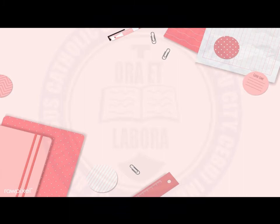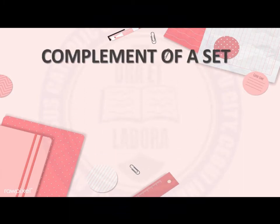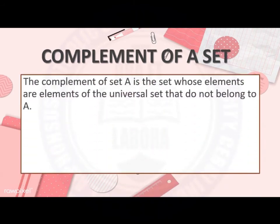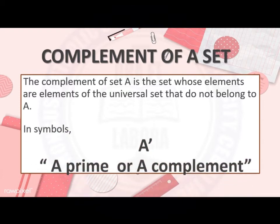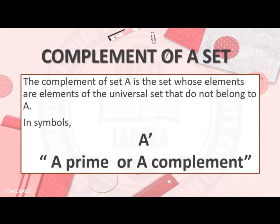Based on the example, we can have the definition of complement of a set. The complement of set A is the set whose elements are elements of the universal set that do not belong to set A. In symbols, we write it as A' or A complement.